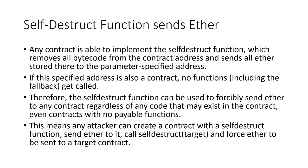Self-destruct is a special function you have to build into your smart contract. When a contract that implements self-destruct calls it, the byte code is removed from the contract address and all the Ether stored in that contract is sent to a parameter-specified address. If that specified address is a contract, no functions get called — instead, the incoming Ether is just added to the balance. This means attackers can use self-destruct to send Ether to any contract, even one without any payable functions.